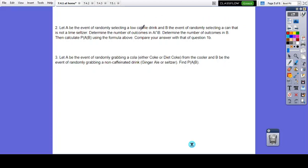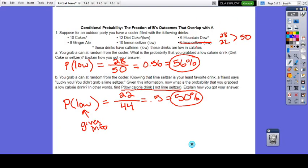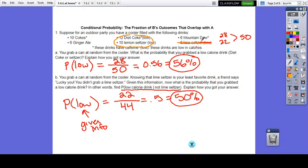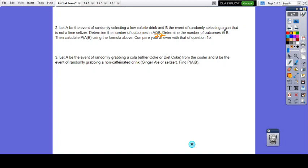So if we do that for this example, let A be the event of randomly selecting a low calorie drink and B the event of randomly selecting a non-lime seltzer. Determine the number of outcomes in A intersect B. So A intersect B, where do they intersect with each other? We look at our non-lime seltzers. That's everything except for the lime seltzer. And then we're looking at where does that intersect with B's. So we are down to 22 for that intersection number. Determine the number of outcomes in just B. So B again is the not lime seltzer. So if we go back to that list, what's not a lime seltzer, we just get rid of these six. 50 minus six is 44.